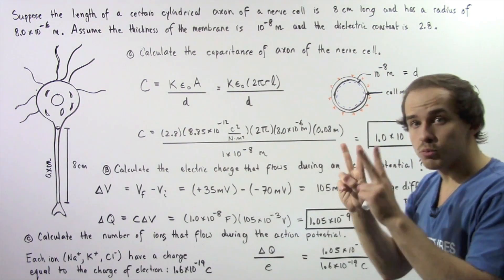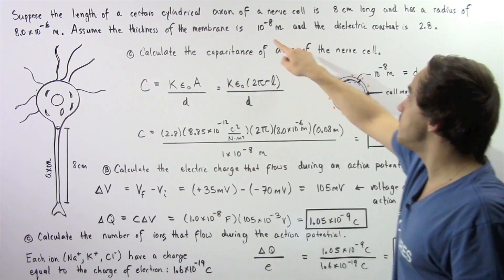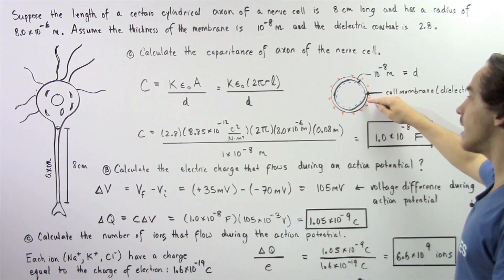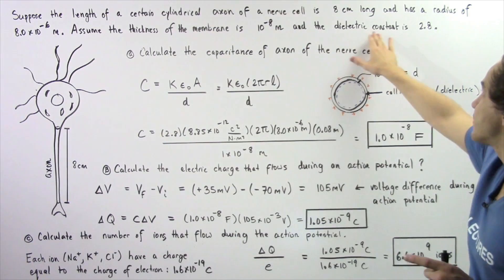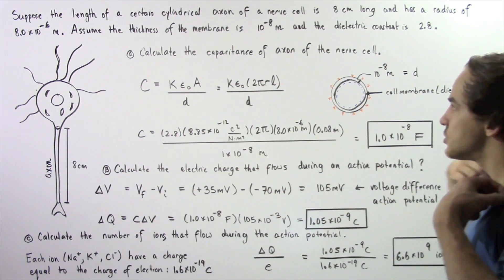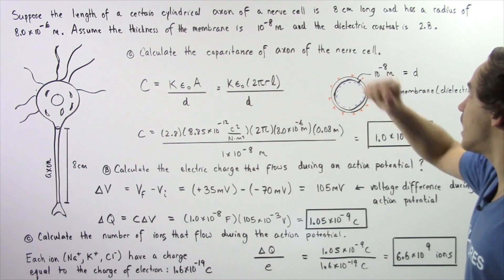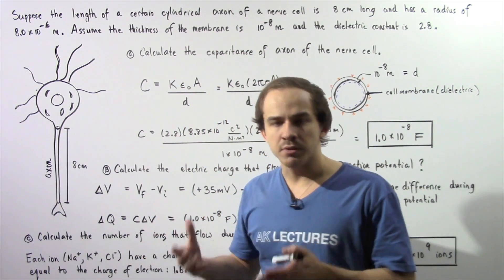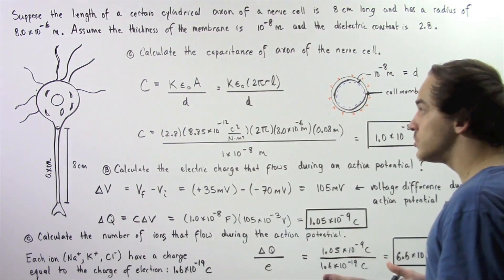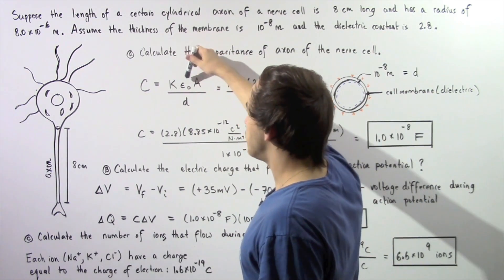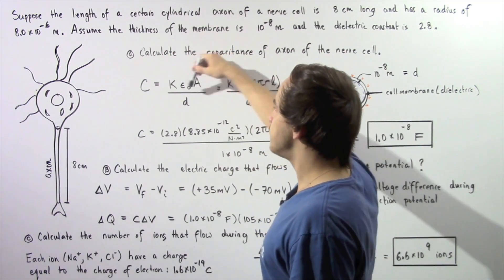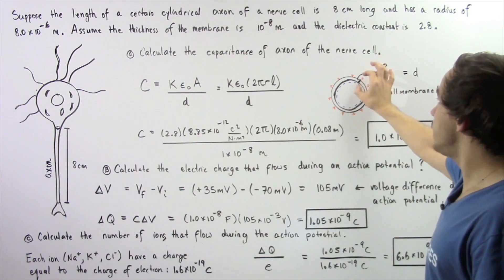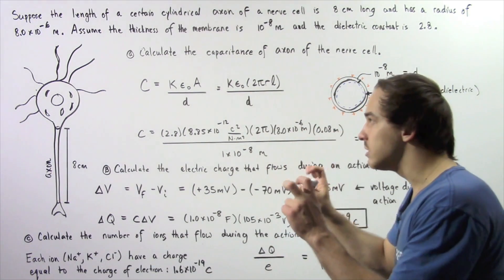The distance between our two plates is given by the thickness of the membrane — 10 to the negative 8 meters. The phospholipids inside the cell membrane act as a dielectric with a constant of about 2.8. In Part A, we calculate the capacitance of the axon. Treating the axon as a cylindrical parallel plate capacitor, our capacitance is equal to the product of the dielectric constant, the permittivity of free space, and the surface area of the cylinder divided by the distance — which represents the thickness of the cell membrane between the two parallel plates.